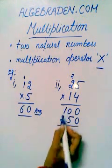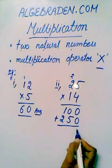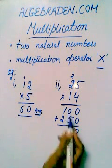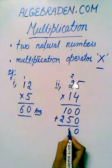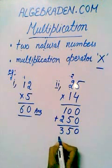Now add both the numbers. 0 plus 0 gives us 0. 0 plus 5 gives us 5. 1 plus 2 gives us 3.